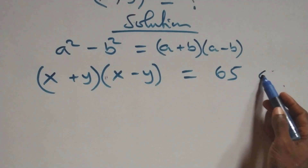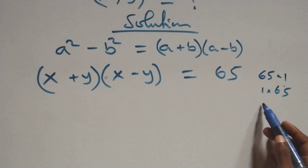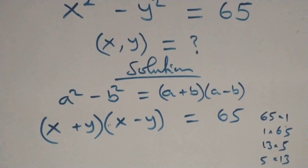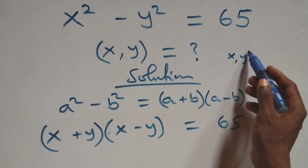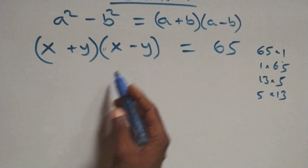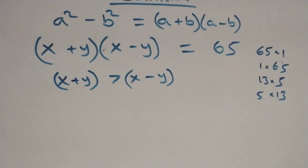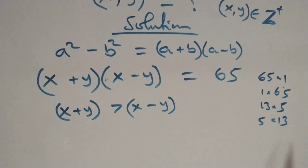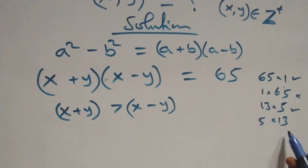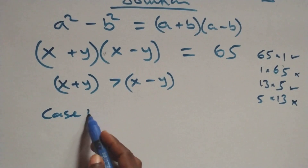We can write 65 as factor pairs: 65 times 1, or 13 times 5. Since x and y are positive integers, it implies that the first bracket (x+y) will be greater than the second bracket (x-y). So the first factor must be greater than the second, giving us two valid cases.